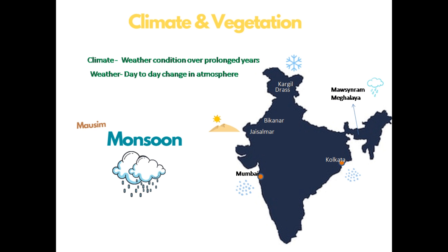Hi everyone, today we are going to cover the eighth unit of NCERT geography: India's climate, vegetation and wildlife. We often get confused with climate and weather — sometimes we even think they are the same, but they are not. Weather is a short-term condition of the atmosphere, whereas climate is the average of weather extended over time, across years, in a particular location or region.